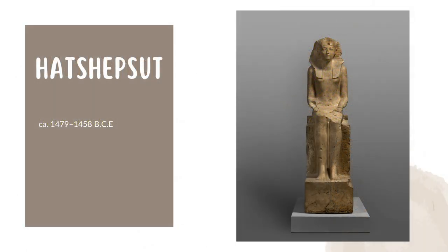This statue of Hatshepsut is one of only two known to depict her fully as a woman. She is seated and wears all feminine clothing except for the nemes, or cloth headpiece reserved for the pharaoh. The inscriptions on the statue show her regnal name, Ma'at Kare, but her titles still use the feminine forms — Lady of the Two Lands and Bodily Daughter of Rei. There are also two goddesses on the back of this sculpture. Using these details, we can assume that the piece was made early in her reign, when Hatshepsut was still consolidating her power.